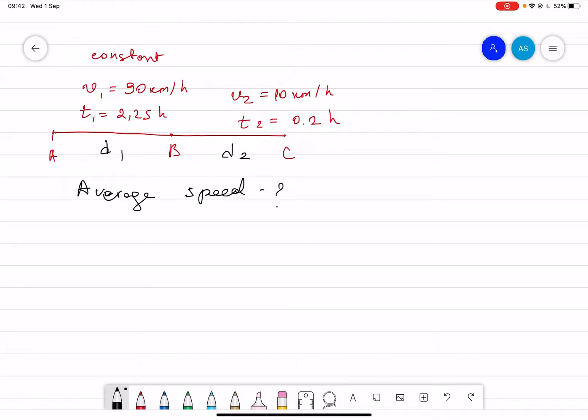The formula for average speed is basically total distance divided by the total time. Correct. Now how can we find the total distance?